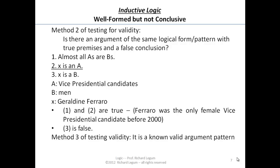Method three of testing validity: it's not a known valid argument pattern. And in fact, it's not a valid, it's not conclusive reasoning. So this argument isn't valid — but this is kind of disturbing, because the argument looks like it's, in some sense, a good argument.